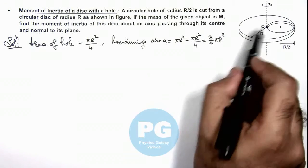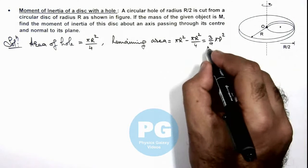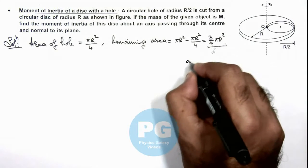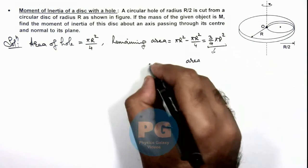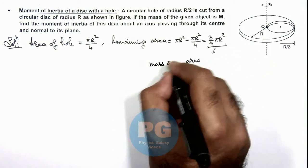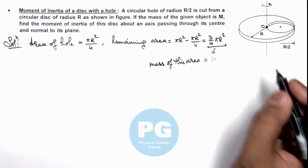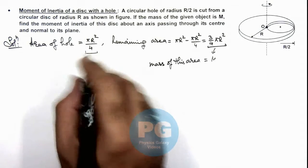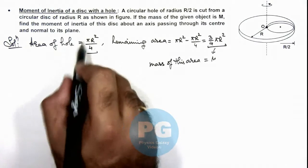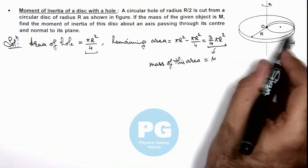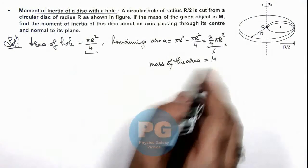And the mass of the given object, that means for this area, we can write: mass of the section of disc which is cut can be given as M/3.